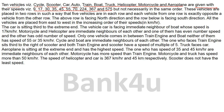But not necessarily in the same order — so you should not put 9 for cycle, 17 for scooter and so on. These vehicles are placed in two rows such that five vehicles are in each row, and each vehicle from one row is exactly opposite to a vehicle from the other row.